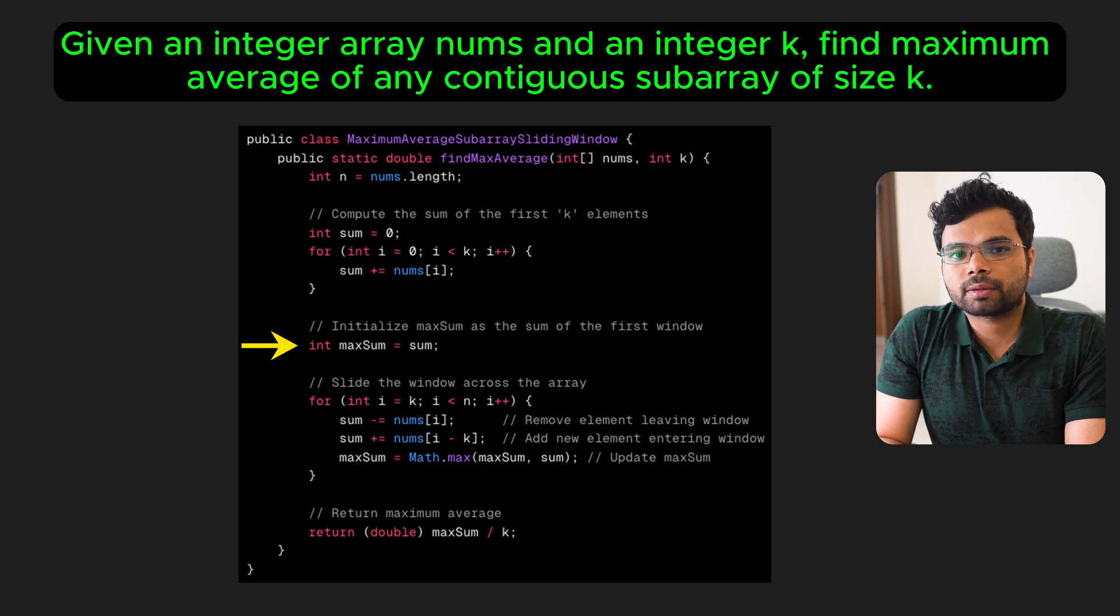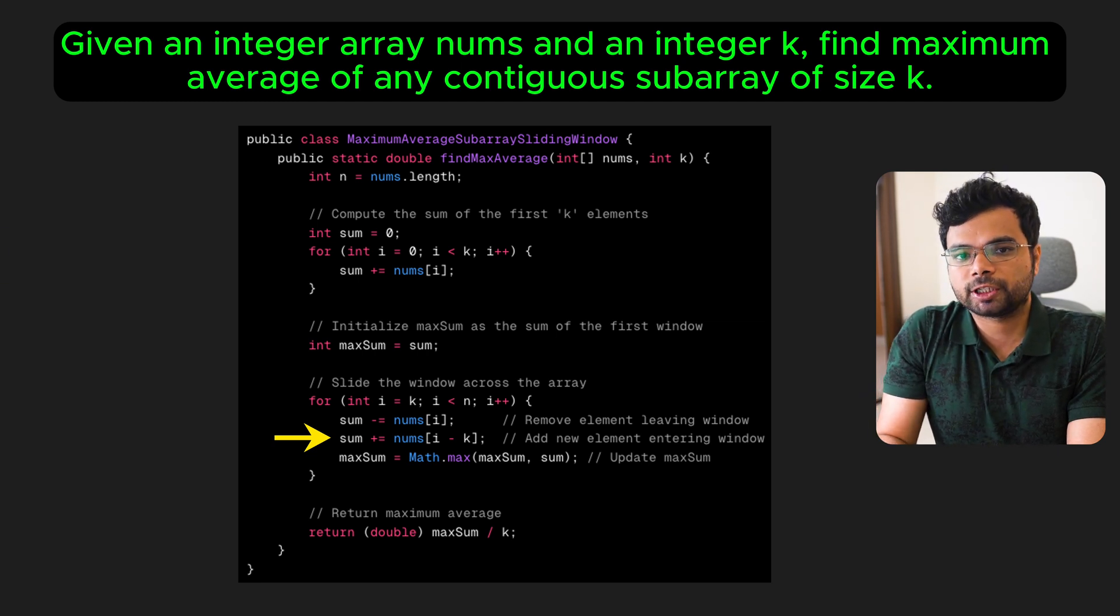MaxSum will keep track of the maximum subarray sum of size k. Slide the window across the rest of the array. Update the window by subtracting the leftmost element and adding the current array element to the window. You can find the leftmost element by going back k positions.